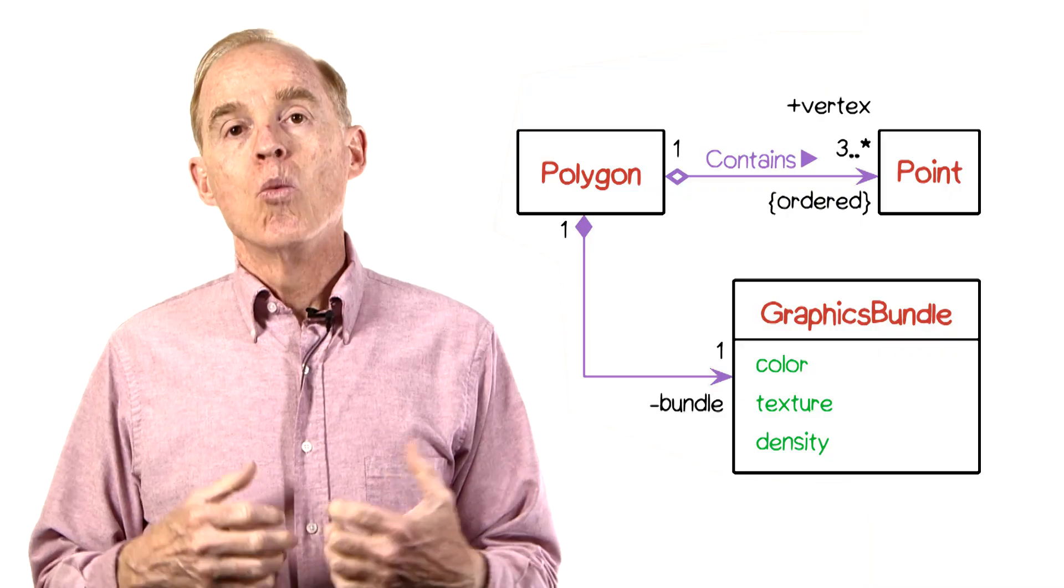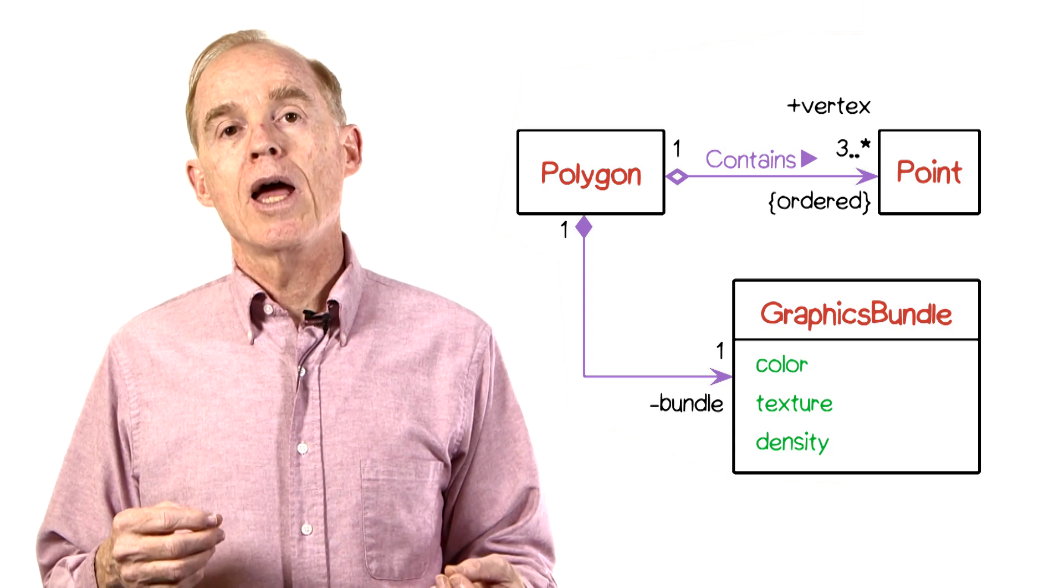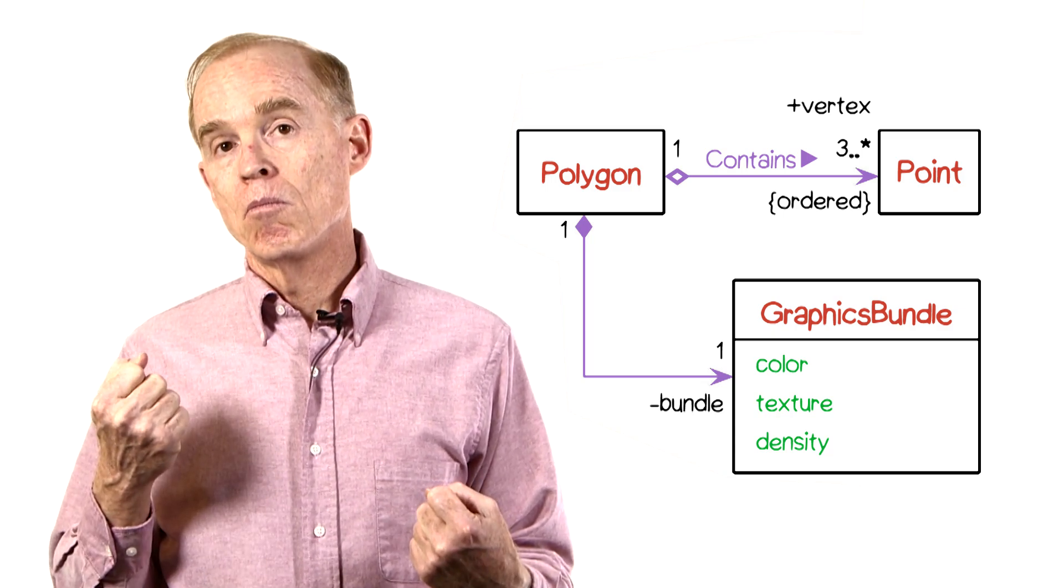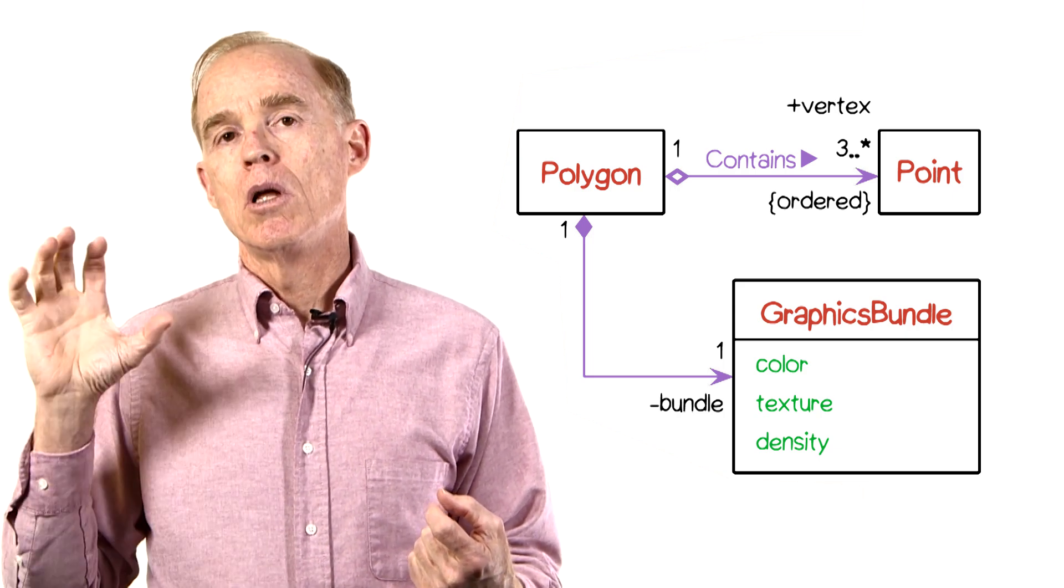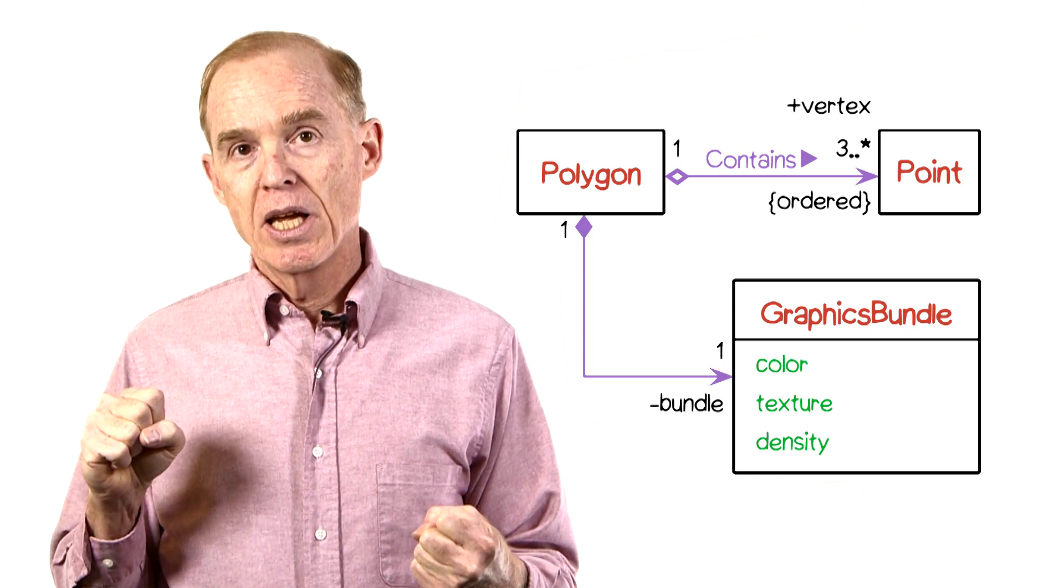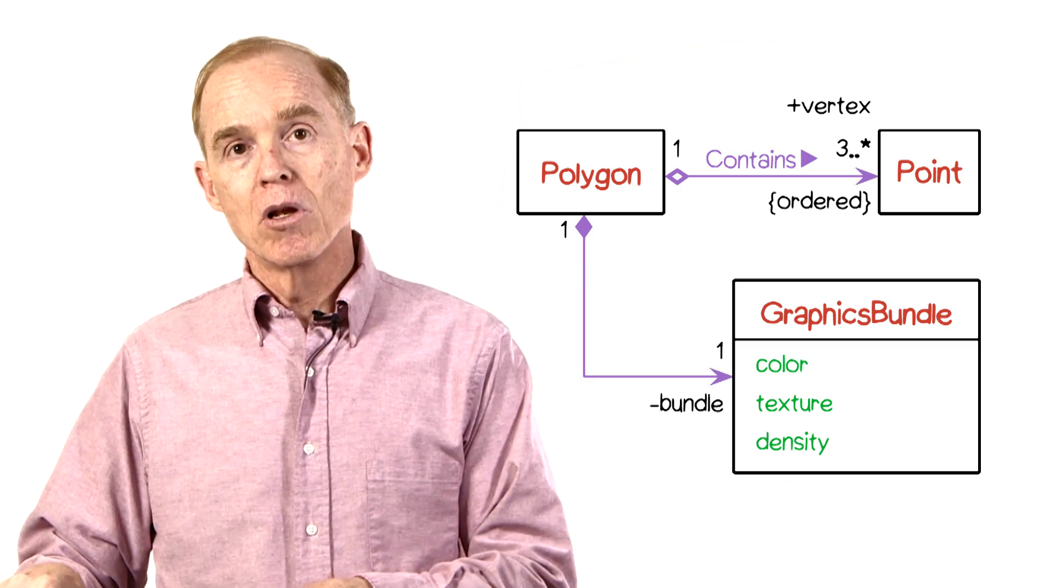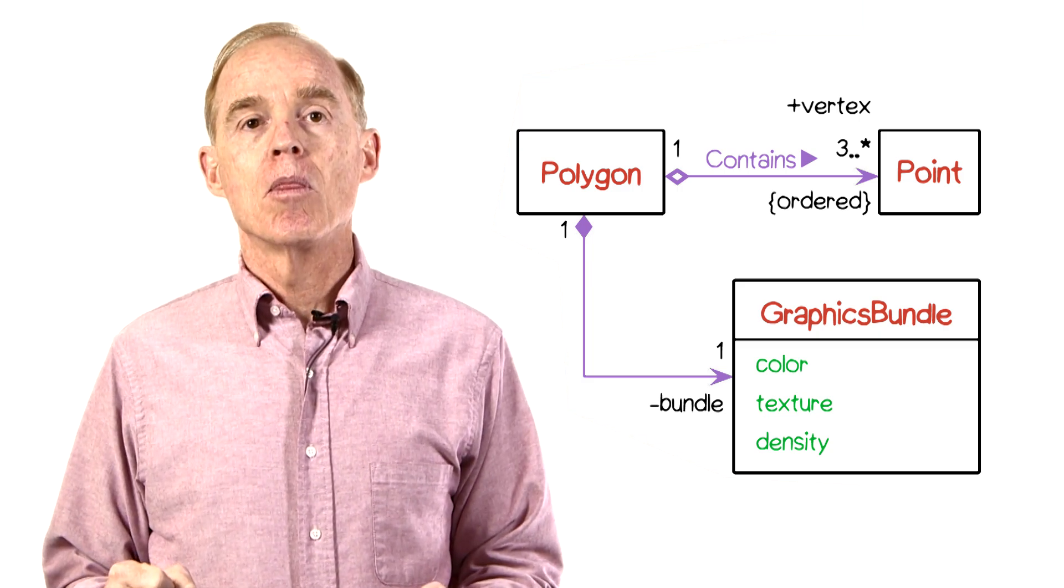We saw also the fact that you could have role names. The word bundle adjacent to the graphics bundle class indicates the graphics bundle is playing the role of bundle in that particular association. You can have these role names on either or both ends of the association line, or you don't need to have them at all.